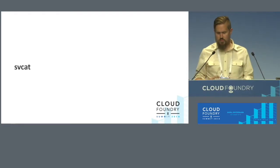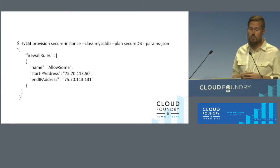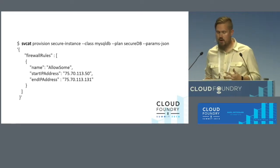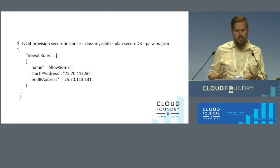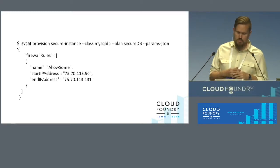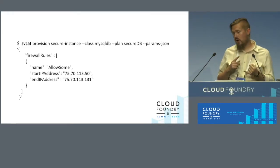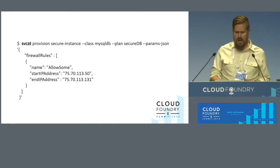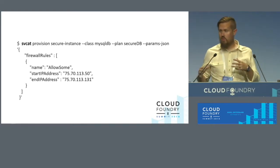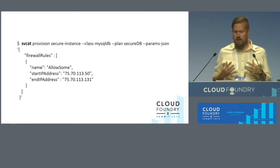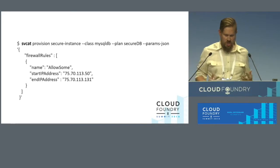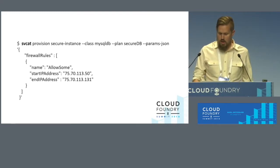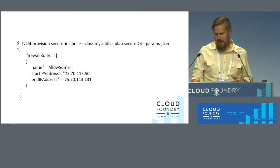We thought about how we could make the Service Catalog experience better, and we built a CLI that's domain-driven to do these sorts of things for you. It's heavily influenced by the experience you get with CF. As an example, if you want to provision a service, you can do things like `svcat provision service-instance` and give it the class and the plan, plus whatever parameters are necessary. You can do operations like register broker, provision services, bind services, update services, and all the corresponding removes.